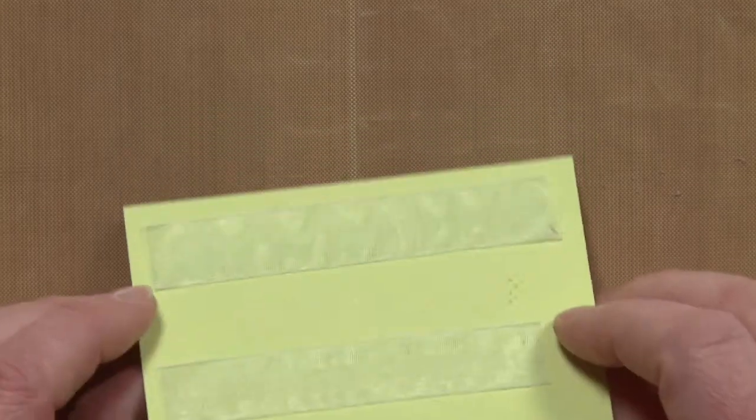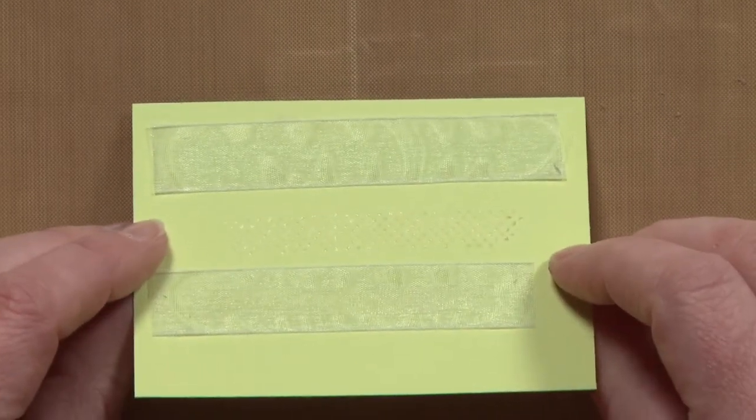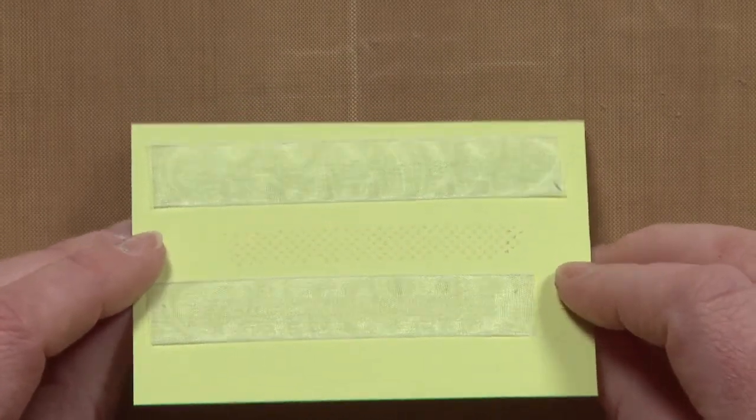Another thing that is awfully handy about these tape runners is that you can use it to adhere sheer ribbon. Now I want you to look closely here.